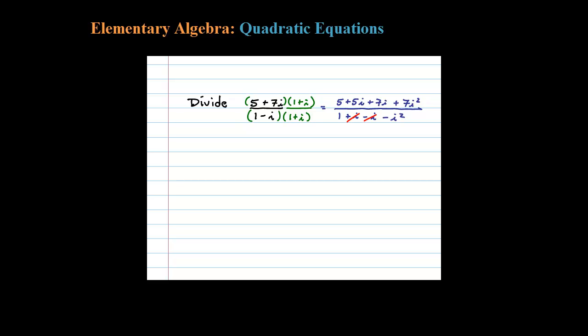So let's simplify. In the numerator I have 5, plus well 5 plus 7i is 12i, plus 7 times i squared. I'm going to replace that with negative 1. In the denominator I have 1 minus i squared. Again, i squared is negative 1.